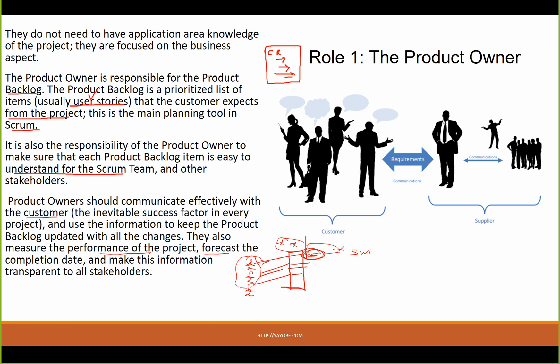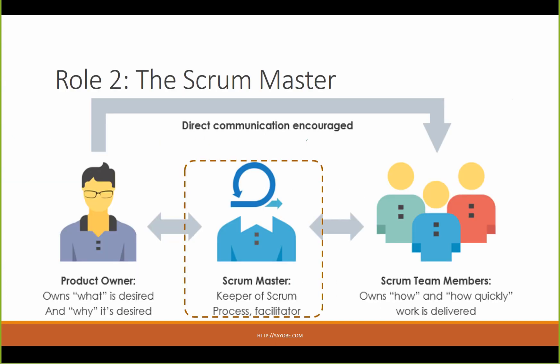This person is responsible for what is going to be done and why it is done. This is the first rule. The second rule is Scrum Master.